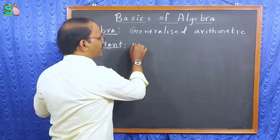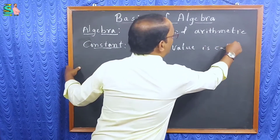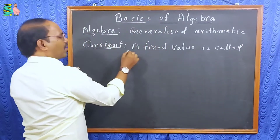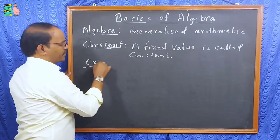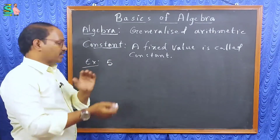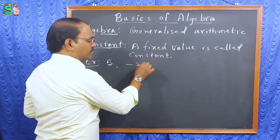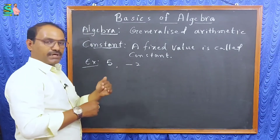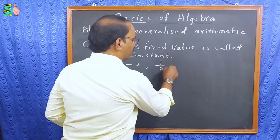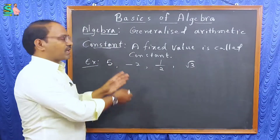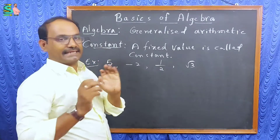The first term is constant. A fixed value is called constant. For example, five means five only — we cannot use another value for five. Minus two means minus two only. Fixed values like five, minus two, one by two, and root three are all called constants.